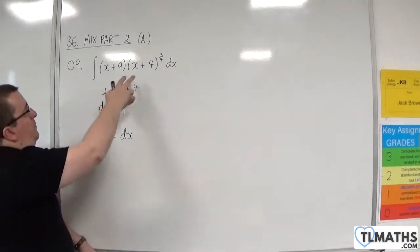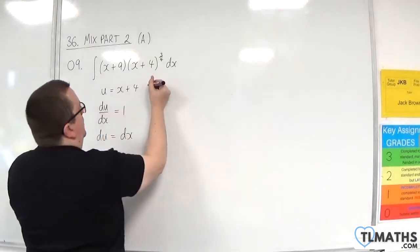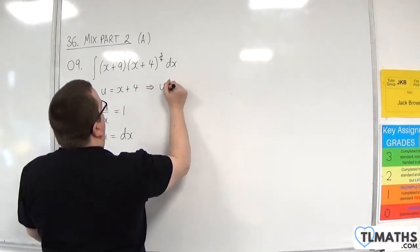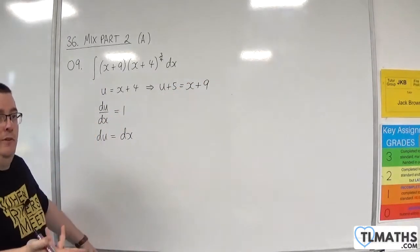Now, we also need to notice that we've got the x plus 9, so I need to go back to the substitution, and what I'll do is I'll add 5 to both sides. So u plus 5 is x plus 9. I now have a replacement for the x plus 9.